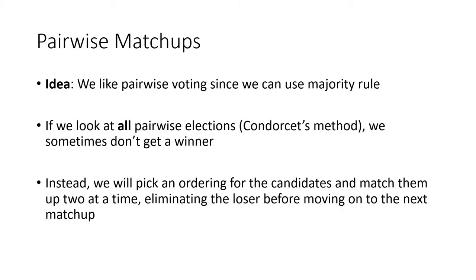The idea behind the sequential pairwise method is that we like pairwise voting because we can use majority rule, and we're pretty confident using May's theorem that majority rule is a pretty fair system when we have exactly two candidates. But what we've seen with Condorcet's method is that if we look at all of the pairwise elections, sometimes we don't get a winner, and that's a pretty big flaw. So we're going to modify Condorcet's method and instead pick an ordering for the candidates and match them up two at a time, eliminating the loser of that pairwise election before we move on to the next matchup.